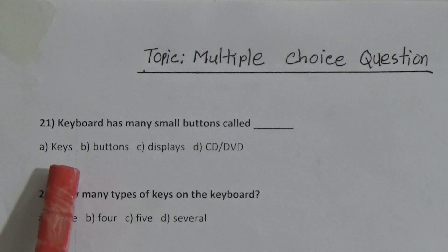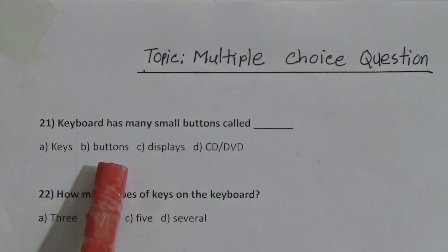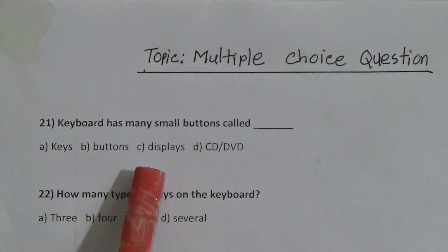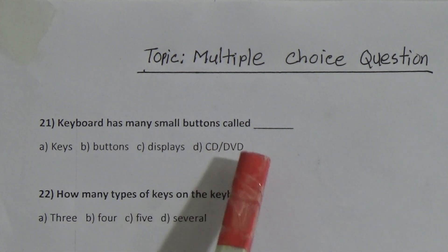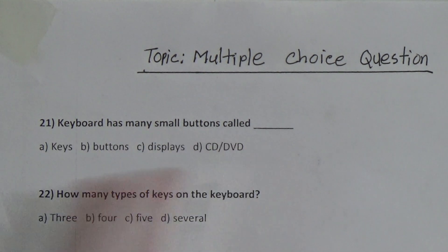Question 21: A keyboard has many small buttons called — there are 4 options: A) keys, B) buttons, C) displays, D) CD or DVD. A keyboard has many small buttons called keys.